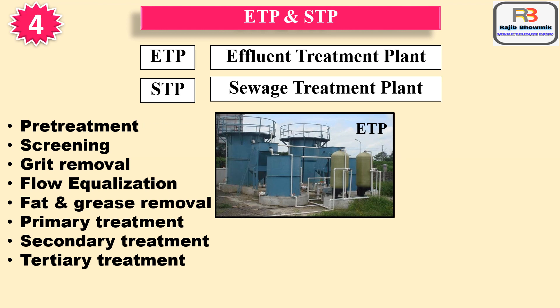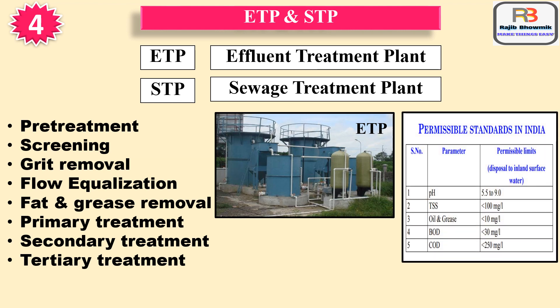Treated water should meet all parameters as prescribed by the Pollution Control Board. Chemical dosing is done in ETP and STP to get desired parameters in the outlet effluent. Permissible standards in India: pH 5.5 to 9, TSS (total suspended solids) less than 100 mg/litre, oil and grease less than 10 mg/litre, BOD (biochemical oxygen demand) less than 30 mg/litre, and COD (chemical oxygen demand) less than 250 mg/litre.